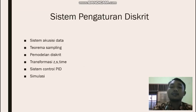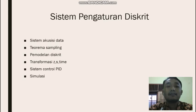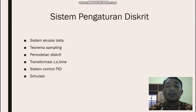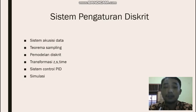Salah satu bab yang ada di sistem pengaturan diskret itu ada: yang pertama sistem akuisisi data, yang kedua teorema sampling, yang ketiga pemodelan diskret, yang keempat transformasi Z, yang kelima sistem kontrol PID, dan yang keenam adalah simulasi. Bab-bab ini kami dapatkan waktu semester 4, tetapi saya tidak akan mengulas semuanya karena sudah dibagi dalam satu kelompok. Saya berfokus ke teorema sampling.